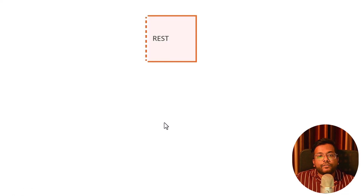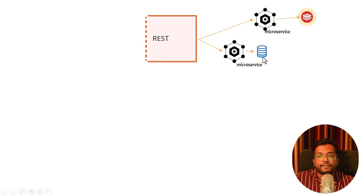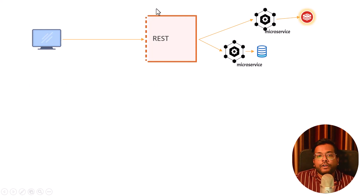Let's understand what we will be building. This is a REST API interface that can be connected to a microservice using Redis server, or it can connect to another microservice using a database. This can behave as an orchestrator, called an API Gateway. Individual microservices can also expose their own REST API. The client can call this API Gateway or directly connect to the microservice. This client can call your REST server with a large number of requests, which can hamper the functionality of your whole application.